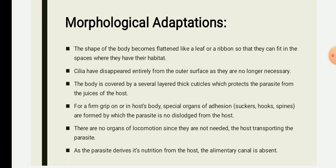There are also hooks in some tapeworms, situated at or around the anterior end where the head is present. In Taenia, hooks are arranged in a double circle at the base of the rostellum. In tapeworms found in dogs, hooks occur in several rows around the proboscis, which may be retractable. Hooks are often provided with a series of teeth and are placed in a buccal capsule.